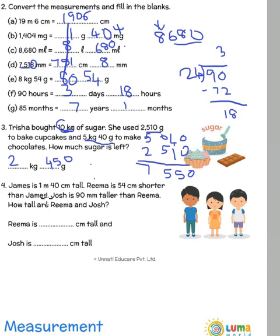James is 1 meter 40 centimeters tall. Rima is 54 centimeters shorter than James. Josh is 90 millimeters taller than Rima. How tall are Rima and Josh? Rima is 54 centimeters shorter than 1 meter 40 centimeters. 1 meter when converted is 100, so 100 plus 40 becomes 140 minus 54. You borrow here, so it becomes 10 minus 4 is 6 and 13 minus 5 is 8. So Rima is 86 centimeters tall.